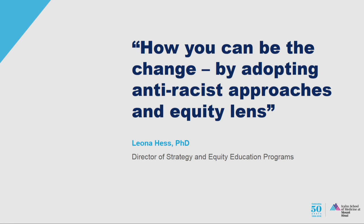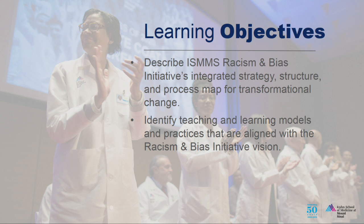I see some faces I know, actually faces from Columbia — as a student, that's really incredible, a flash in the past. I hope to walk us through a little bit of what RBI — the Racism and Bias Initiative — is. We'll talk about the strategy, the structure, and the process map for transformational change, giving the big picture and then delving deeper.